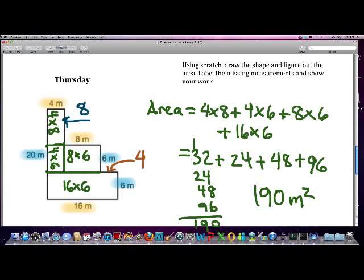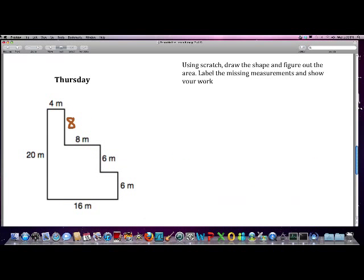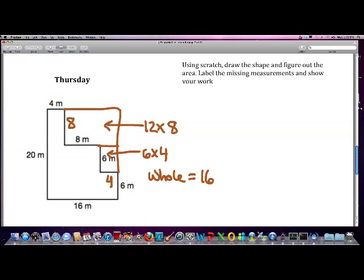Now let's try doing the problem in a different way. Again, I found those measurements to be 8 and 4. But this time, I'm going to make a big rectangle and subtract off these two little rectangles. So the smaller one is a 6 times 4 and the bigger one is a 12 times 8. And the whole big rectangle is 16 times 20, which is 320.